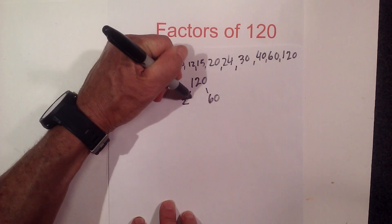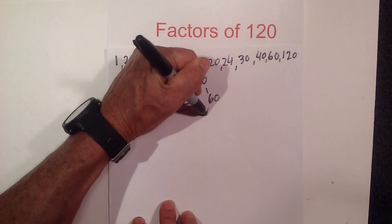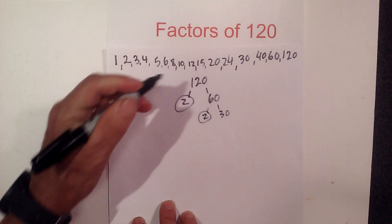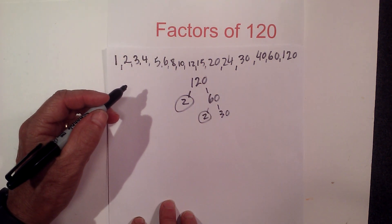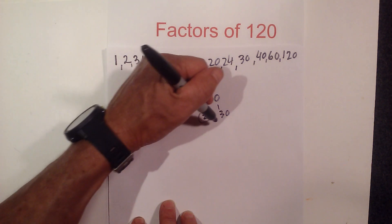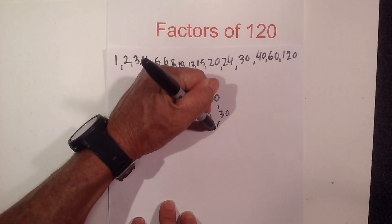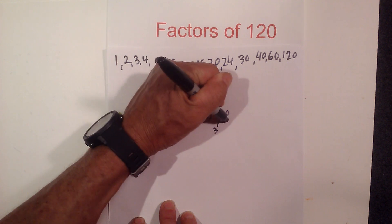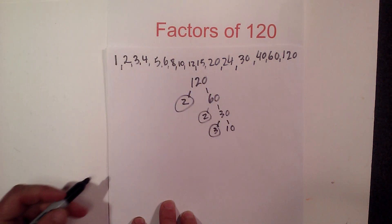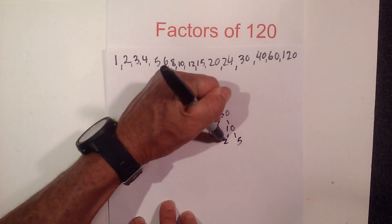Circle the 2 because it is prime. 2 times 30 — circle the 2 again, it is prime. Then 3 times 10 — circle the 3 because it is prime.